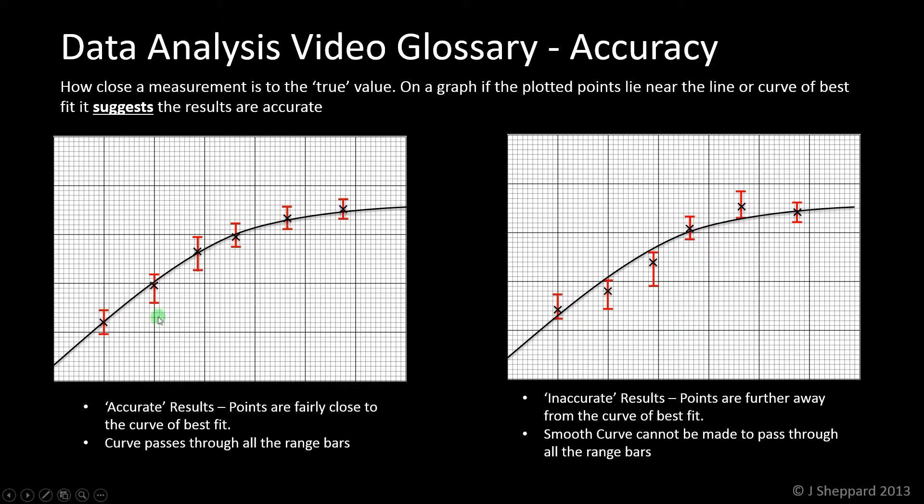So on the left-hand side here, we've got the plotted points and the red range bars, and a line of best fit, and the line of best fit can easily go through all of the range bars. So it's a curve of best fit, it doesn't matter if it's a straight line or a curve. One smooth curve goes through all the range bars and near the points. So we say that those results are probably quite accurate.